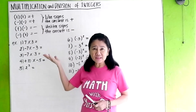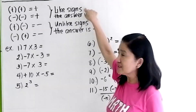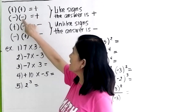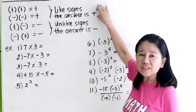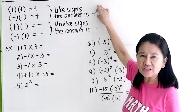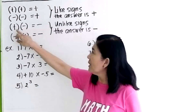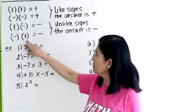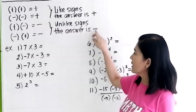These are the rules for multiplication and division of integers. When you have like signs — positive times positive is positive, negative times negative is positive — meaning whenever you have like signs, the answer is always positive. When the signs are unlike, like positive times negative or negative times positive, the answer is always negative.